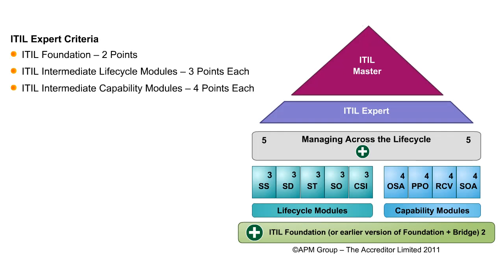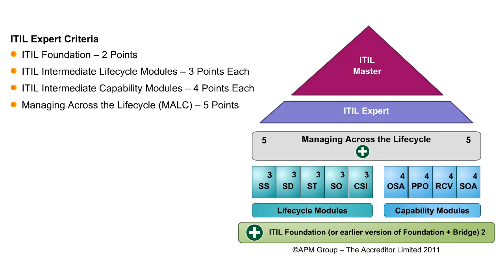Once you accumulate 15 points plus two from foundation — that is, 17 credit points — you become eligible for the third level, which is MALC, providing five credit points. Once you are certified in MALC, your final credit score becomes 22. To become an ITIL expert, there is no separate exam. You need to accumulate 22 credits to become an ITIL expert.